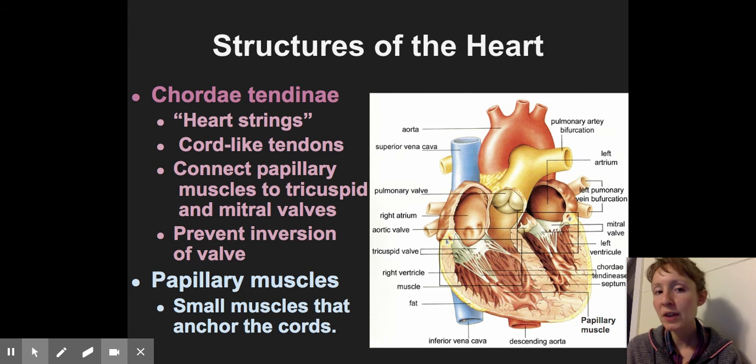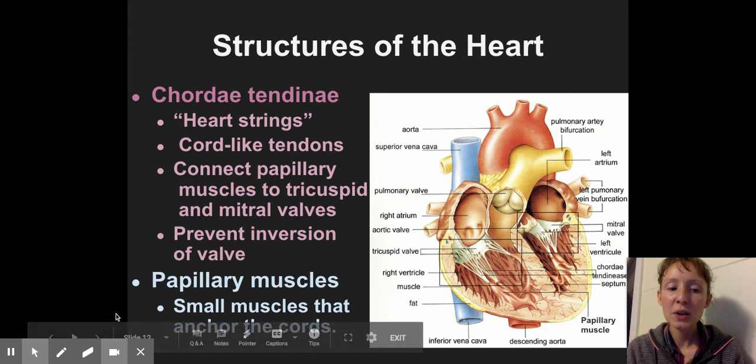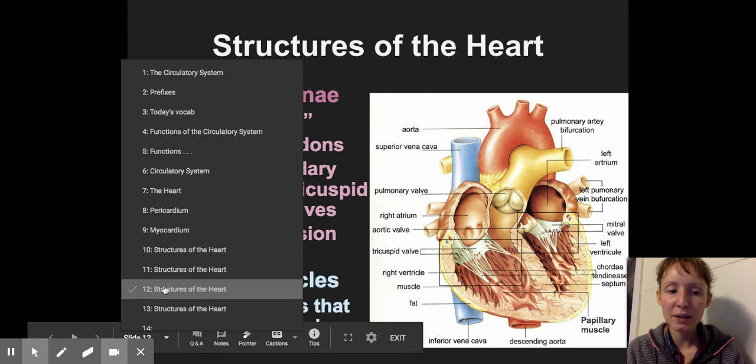Now the structures of the heart also include the chordae tendineae, which basically are controlling the movement of those valves. And you can literally think chords, like music chords, and then think heartstrings, like playing on your heartstrings. These are chord-like tendons. They connect papillary muscles to the valves that control the flow of blood. So if I go back real quick, let's look at those valves.